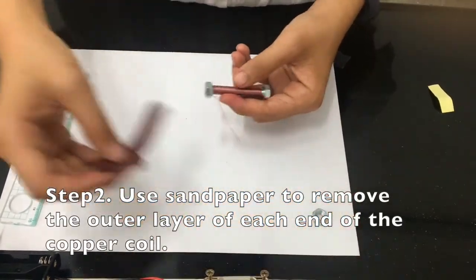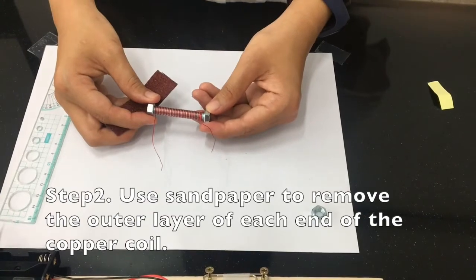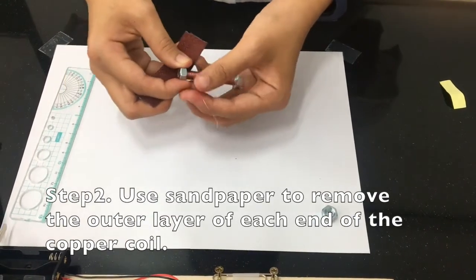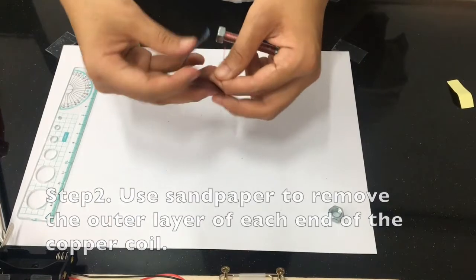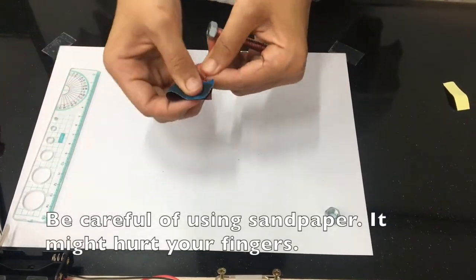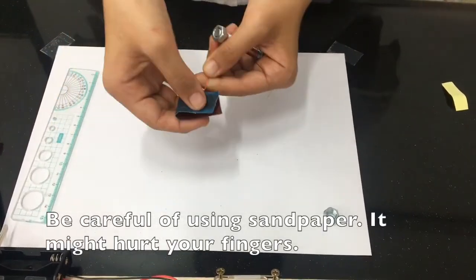Step 2: Use sandpaper to remove the outer layer of each end of the copper coil. Be careful using sandpaper, it might hurt your fingers.